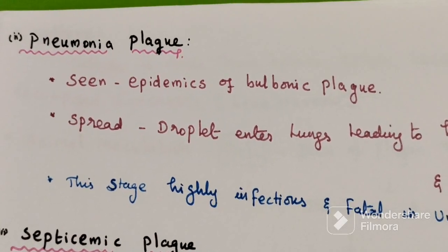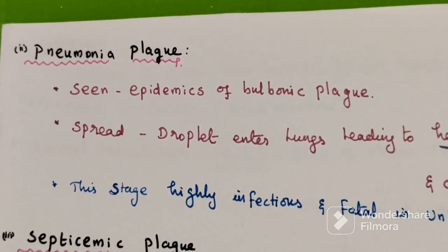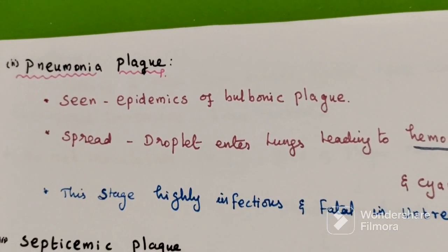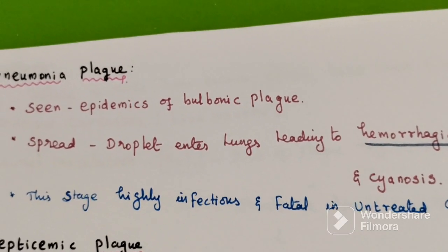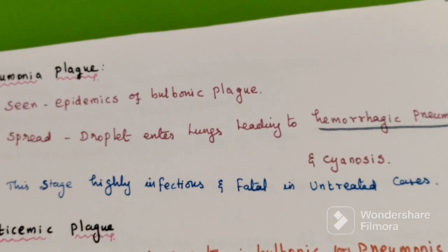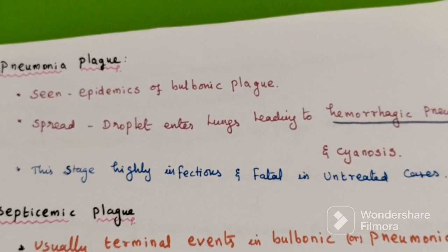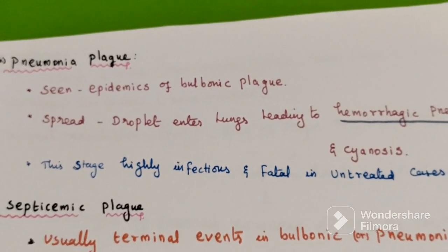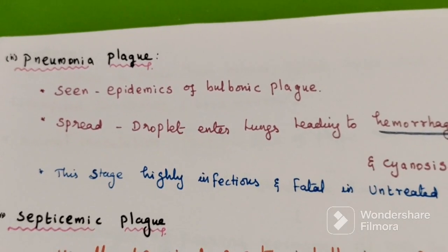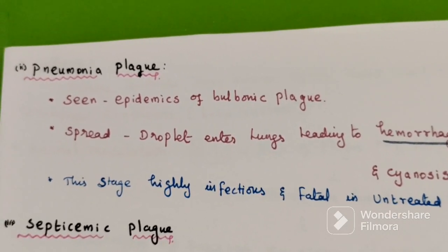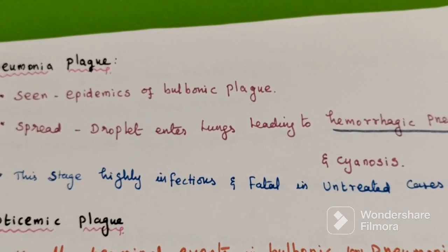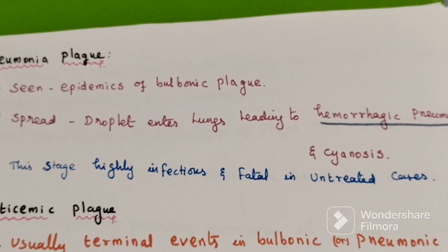Second type is Pneumonic plague. This is sometimes seen during epidemics of Bubonic plague; rarely it can occur as primary Pneumonic plague. It occurs in epidemic form and spreads as droplet infection. Bacilli enter the lungs through droplets, leading to hemorrhagic pneumonia. Cyanosis is very predominant. This stage is highly infectious and almost invariably fatal in untreated cases.